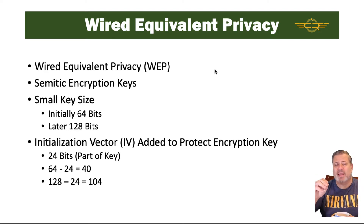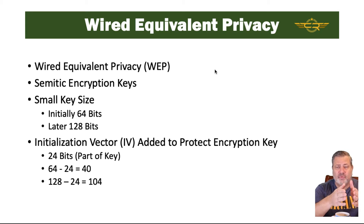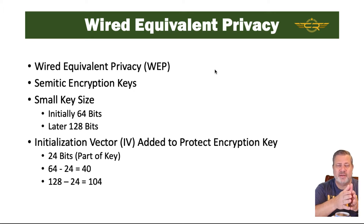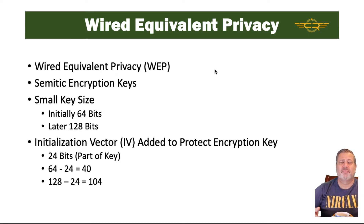WEP had a thing called an initialization vector, or IV, added to protect the encryption key. That was 24 bits, and the IV was actually part of the key size. So if you had a 64-bit requirement, part of that 64 bits was the IV, meaning your actual encryption key could only be 40 bits. And even when increased to 128 bits, your key size could only be 104 bits.